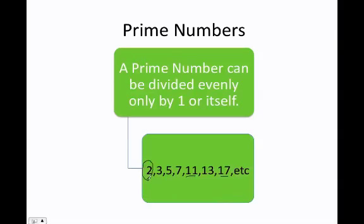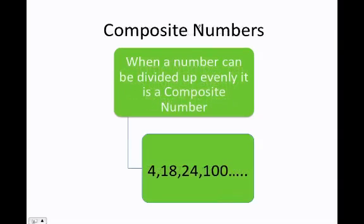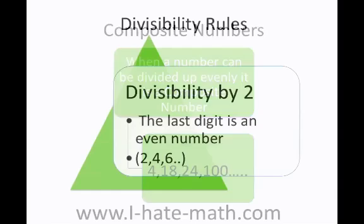The number 2 is the only even prime number. A composite number is the opposite — it's when a number can be divided up evenly. For example, 4, 18, 24, and 100 can be divided by 2, this one can be divided by 2, by 3, by 6, and so on. So let's go ahead and learn the divisibility rules to see how we can make this easier.